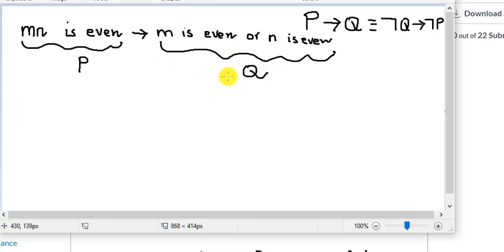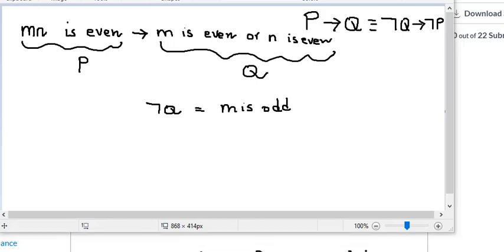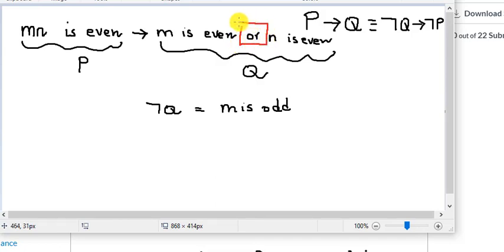So let's talk about this. Now I need to convert this into not Q. So what is not Q? Not Q is, as you can see, M is odd. And we have this one, or, see that, that's a classic one. We have the or here, right? So when or becomes and, a lot of people miss it. It becomes and, and N is odd, right?